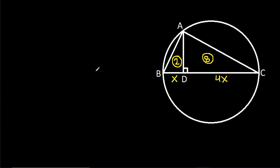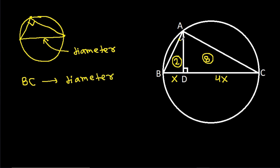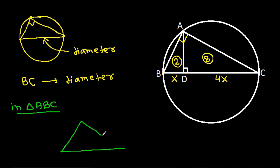In any circle, the diameter makes an angle of 90 degrees on the circle. Here BC is the diameter, so angle BAC equals 90 degrees. In triangle ABCD, this angle is 90 degrees, angle ADC is 90 degrees, BD is X, and CD is 4X.